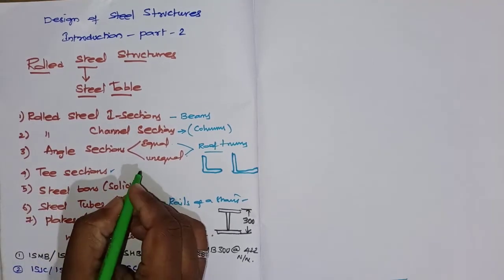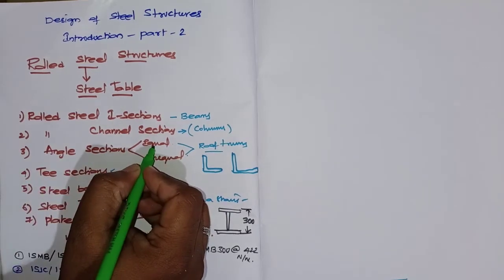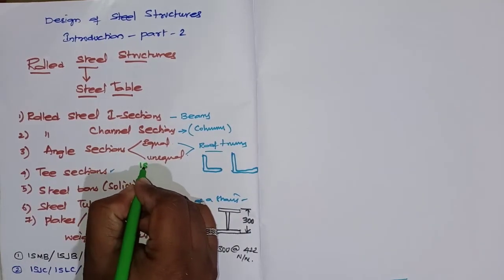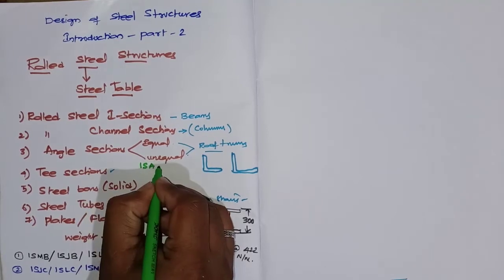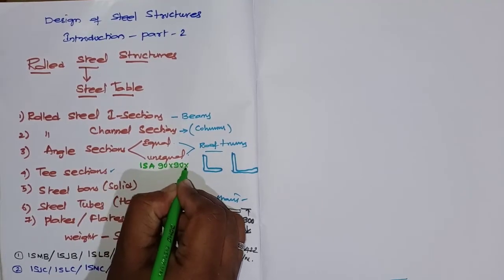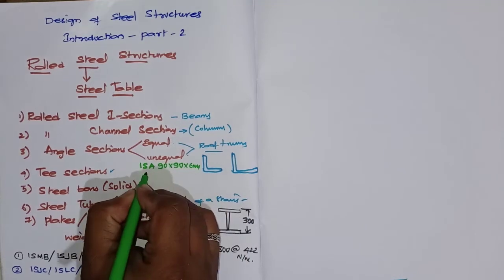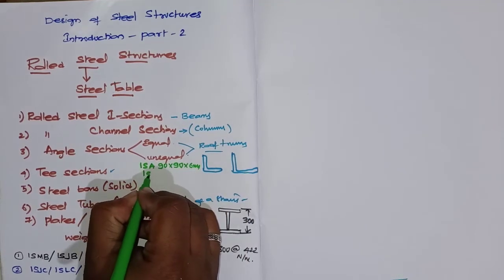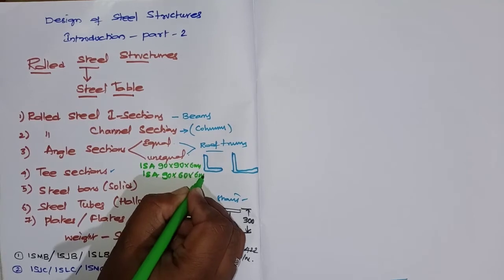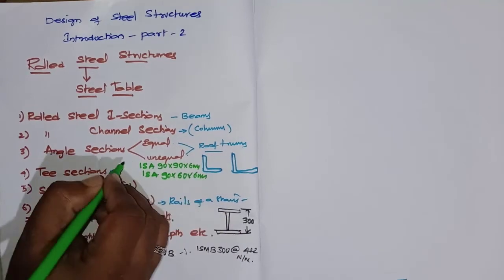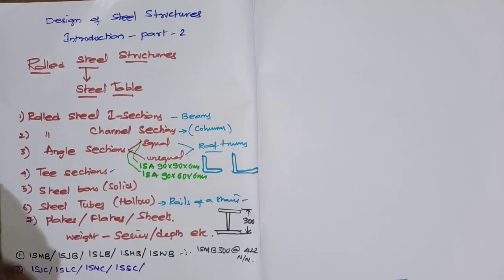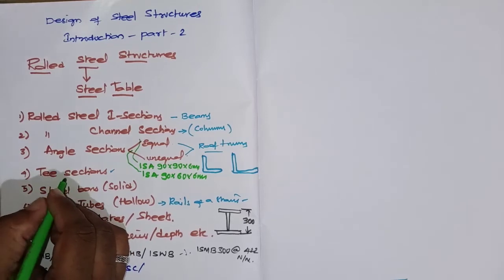For angle sections, ISA 90×90×6 mm is an equal angle, whereas ISA 90×60×6 mm is an unequal angle. Coming to T-sections, they are classified as Indian Standard Junior T-section, Indian Standard Light T-section, and Indian Standard Heavy Flange T-section.